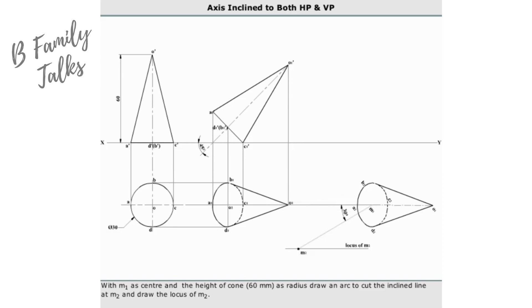The arc cuts the locus at M2 and M3. Join M1 M3, which makes the apparent angle of inclination alpha with the XY line.